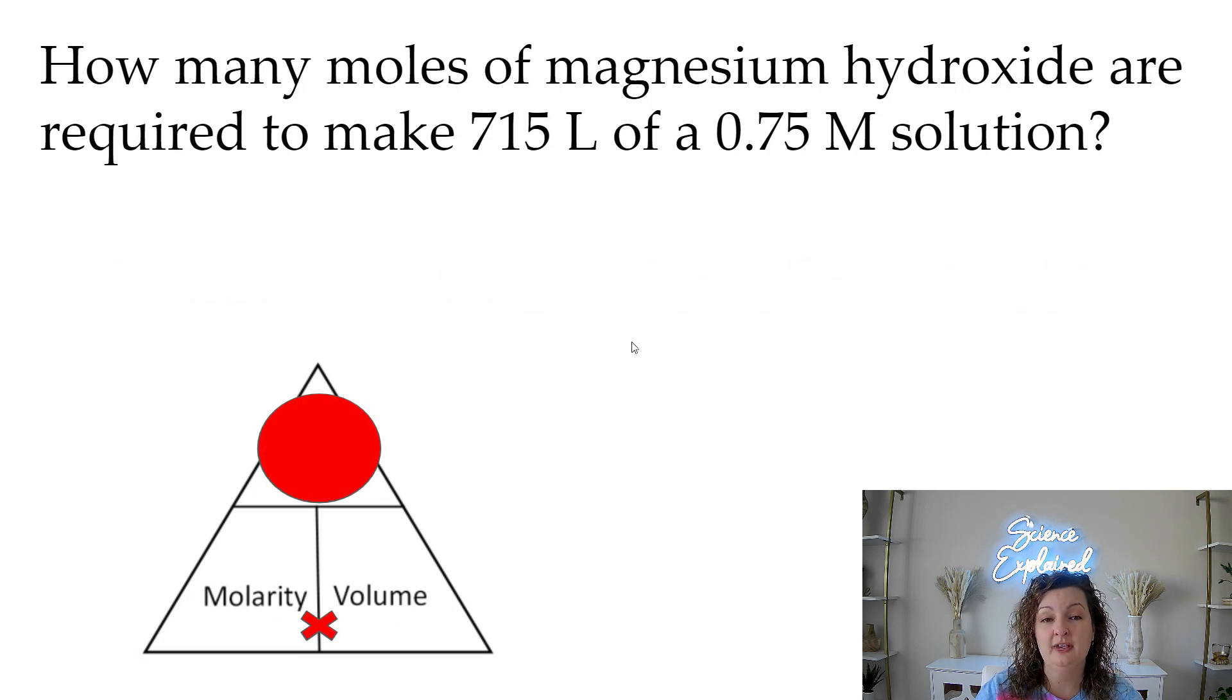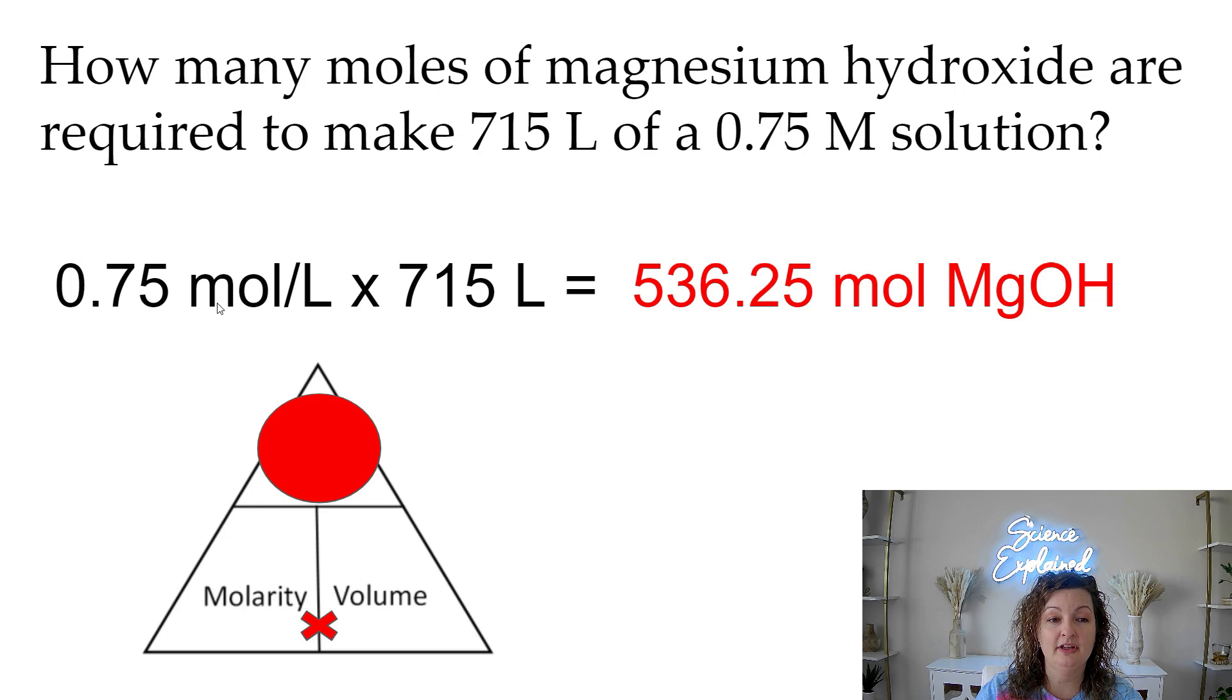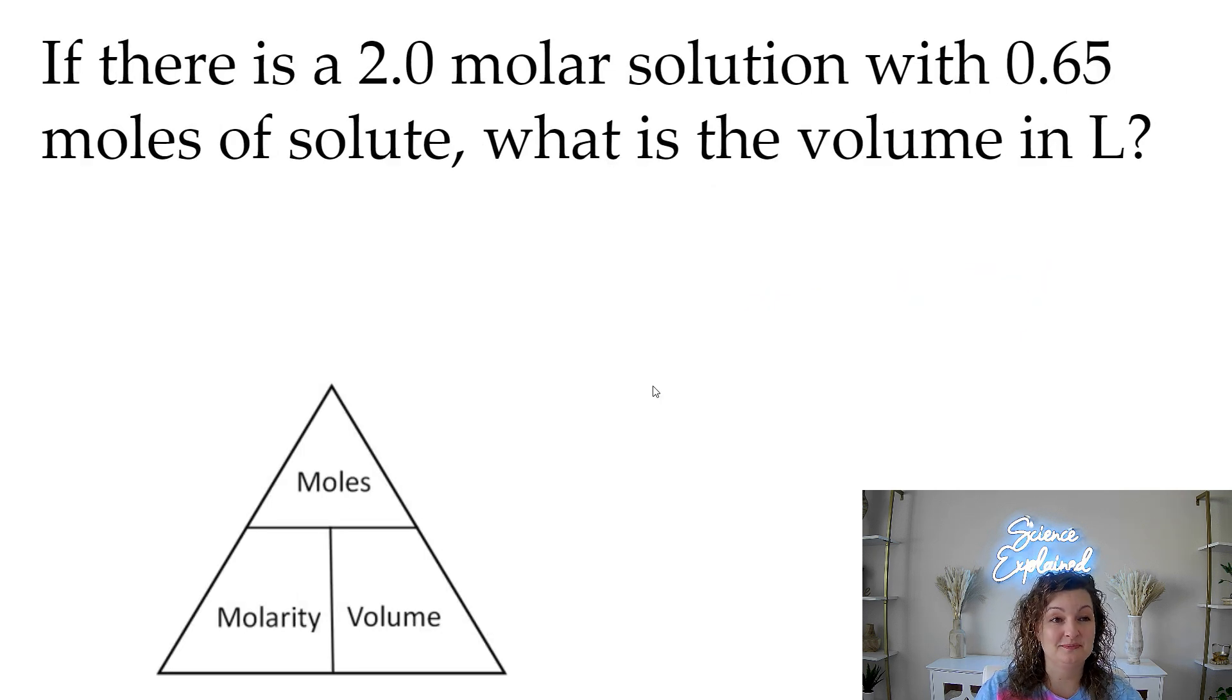So we're going to multiply out the volume and our molarity, and we end up getting 536.25 moles of magnesium hydroxide. Let's try another one.